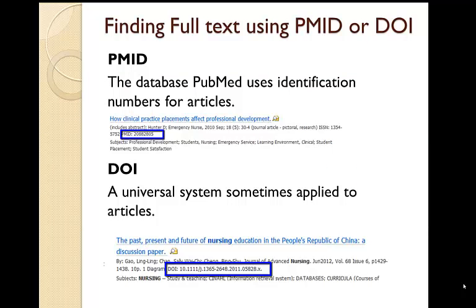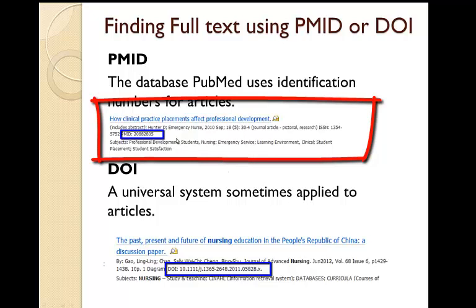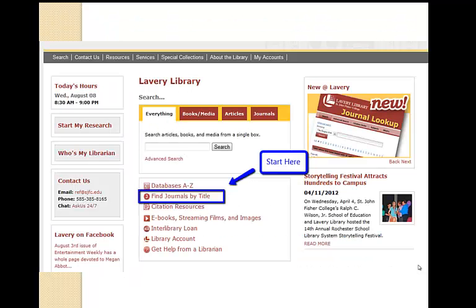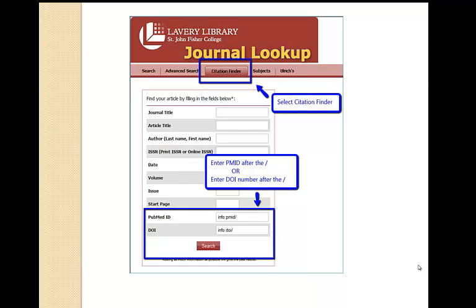The final way to find full text is by using the PubMed ID number or the DOI. The PMID is a unique number string that the database PubMed uses to identify articles. Here is an example of where to find the PubMed ID number in a citation in PubMed. The other option is using the DOI, which is a number-letter string assigned to articles. If you have either the PubMed ID or DOI, start at the Find Journals by Title on the library homepage. You are going to select the citation finder from the tabs at the top, and then scroll down until you see the PubMed ID box or the DOI.